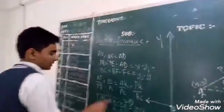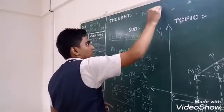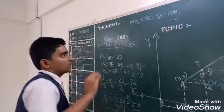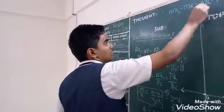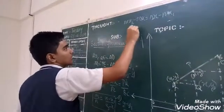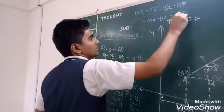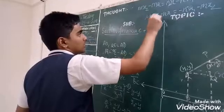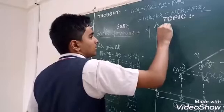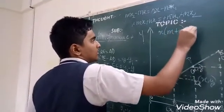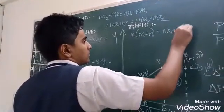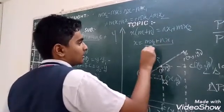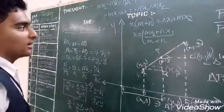So if we cross multiply, we get M times (X2 minus X) equals N times (X minus X1). Here we need the point X, so rearranging: MX plus NX equals MX2 plus NX1. Taking X common, X is equal to MX2 plus NX1 by M plus N. Similarly, if we solve for Y, we get Y equals MY2 plus NY1 by M plus N.